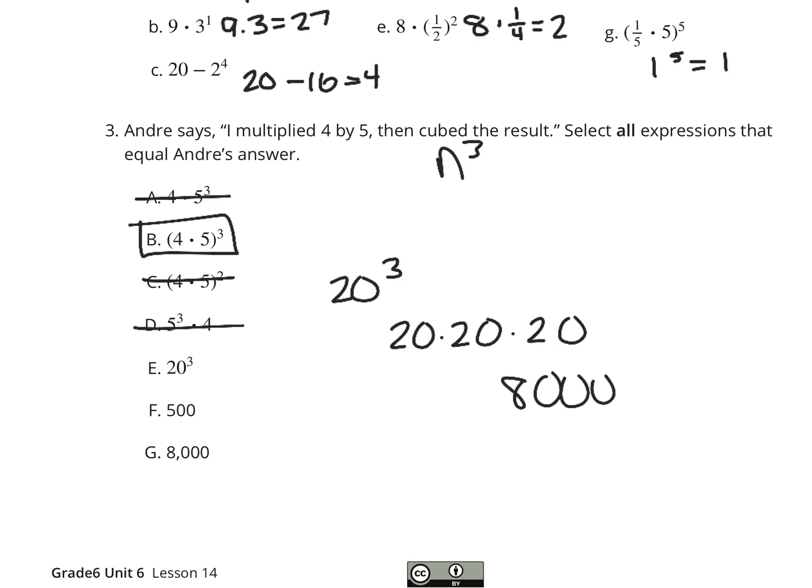And so it is 20 to the third as well, so it's E, not F. So we're looking at B, E, and G being your solutions for this question.